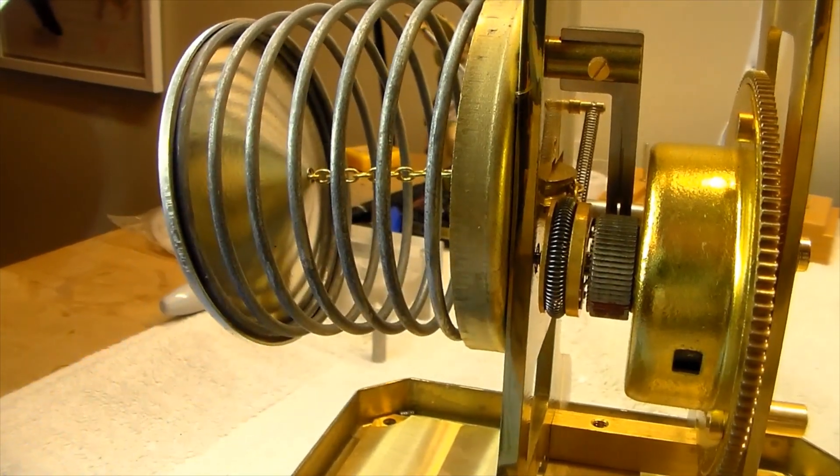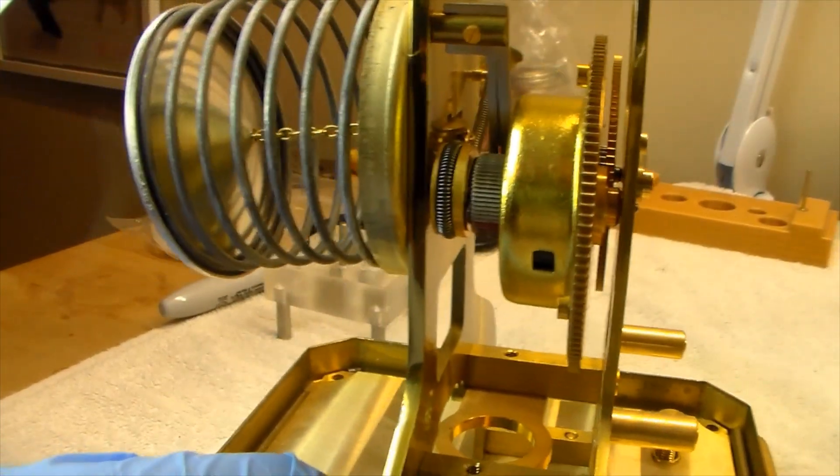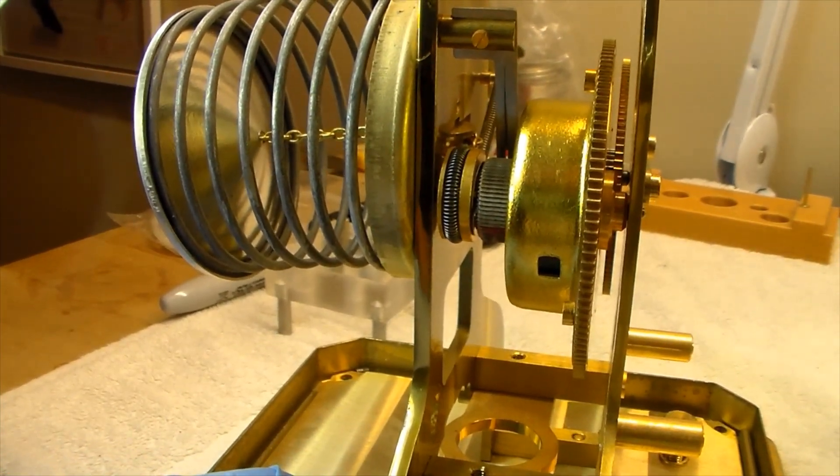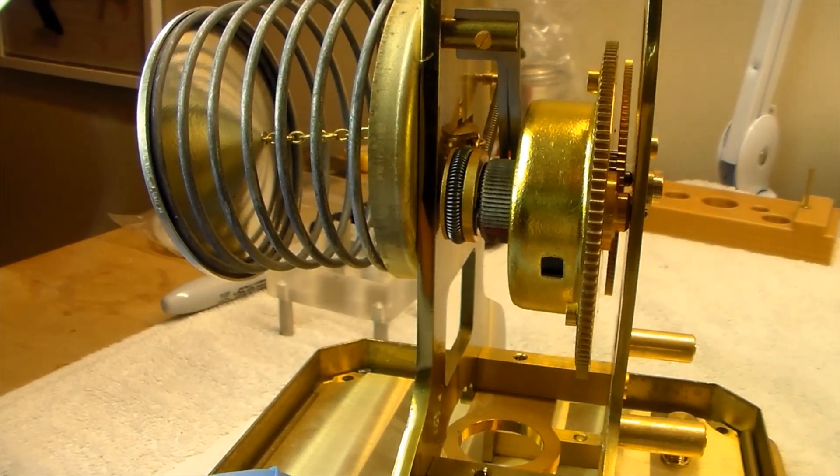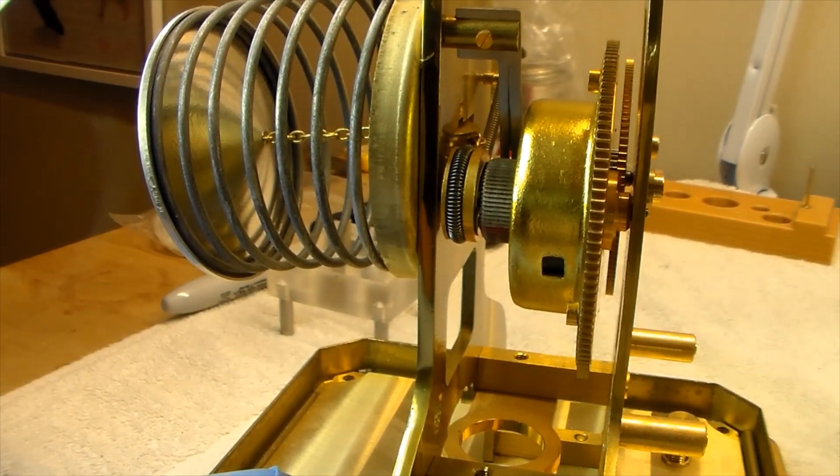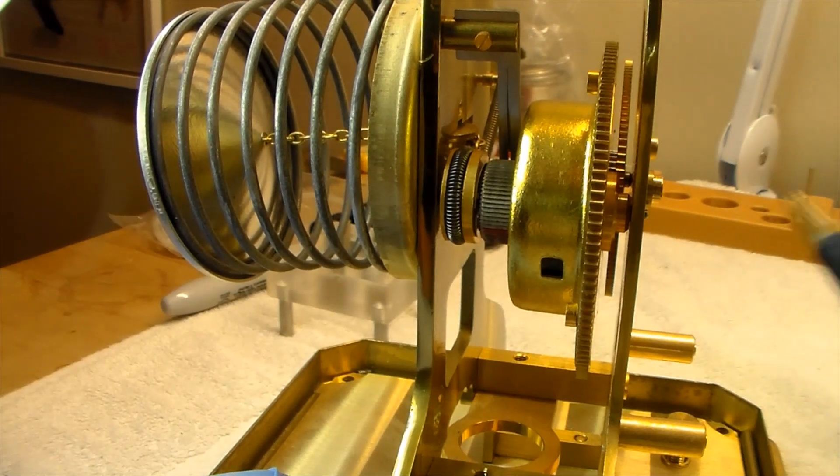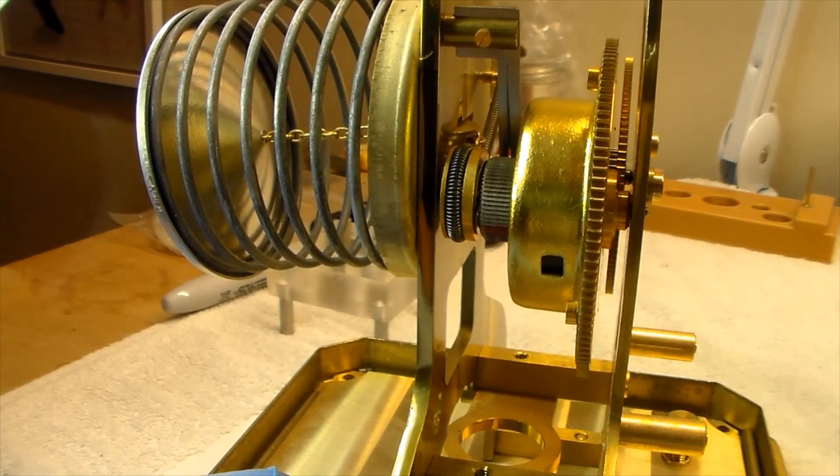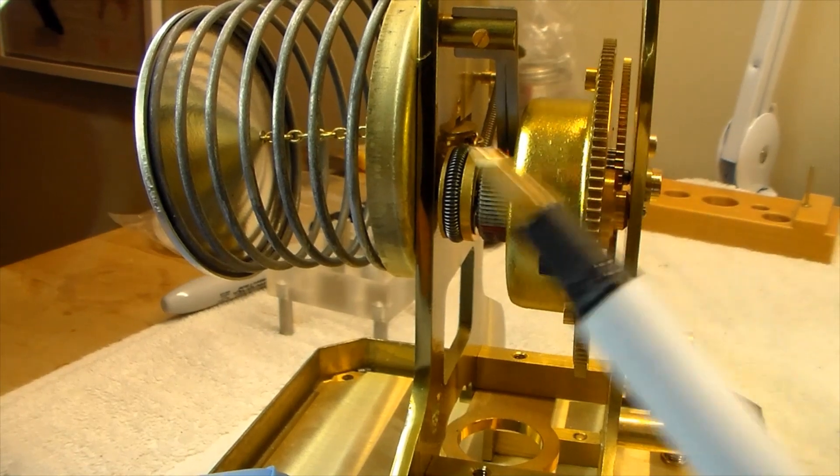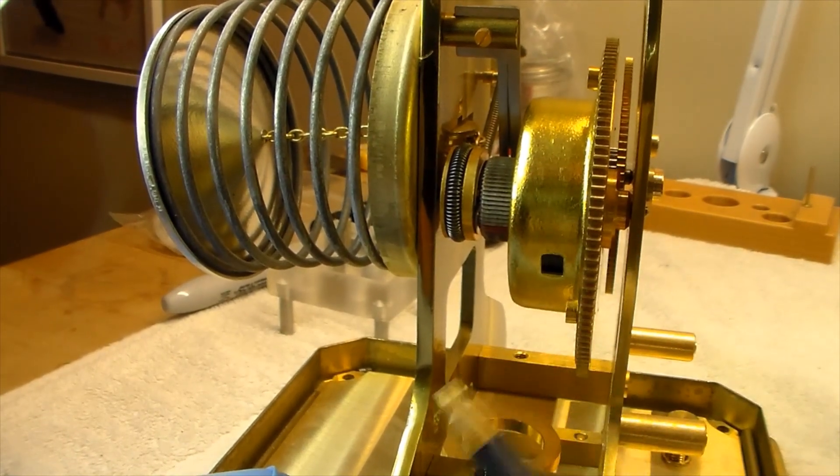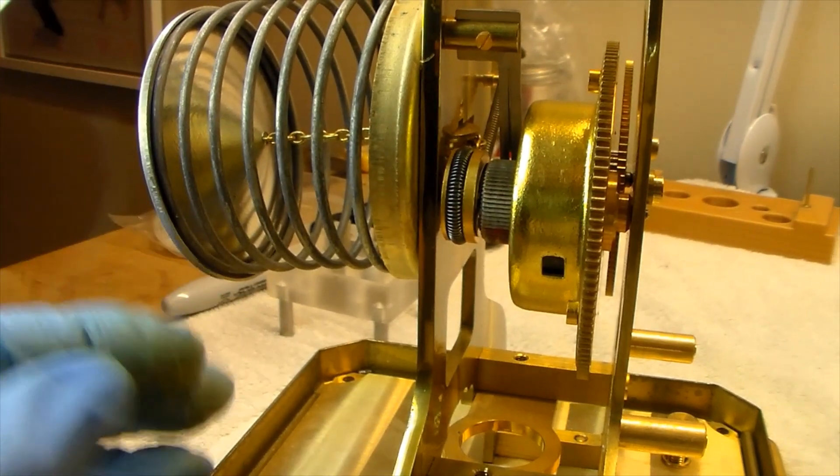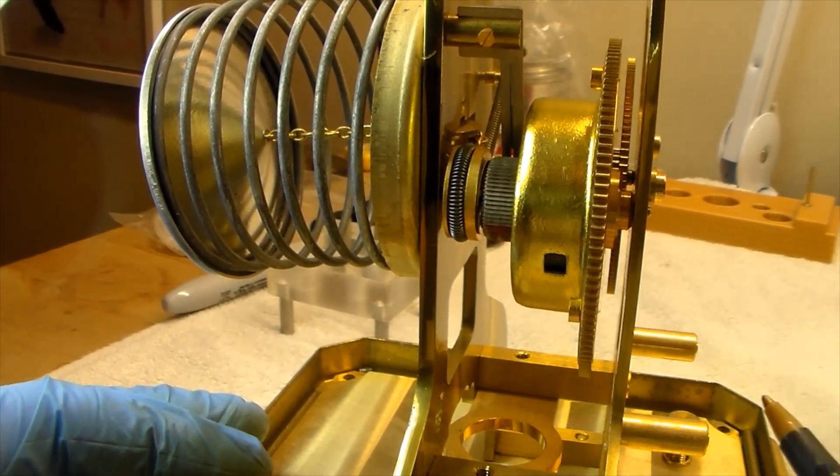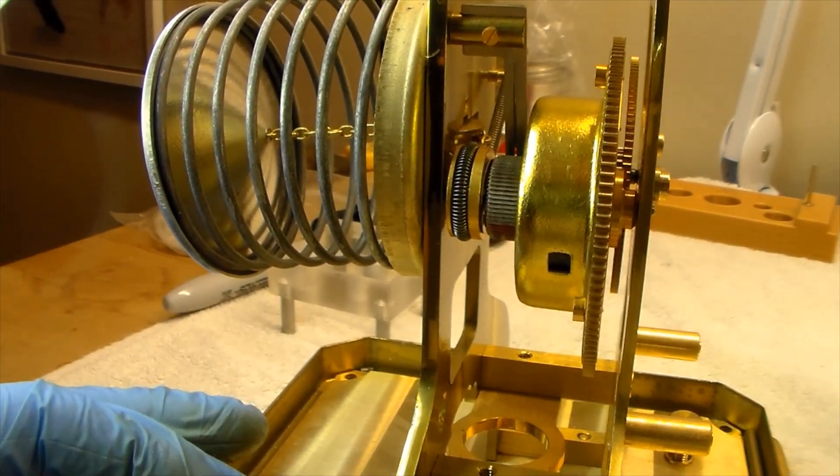A fully wound mainspring will provide nearly a year's worth of running time on the Atmos clock, anywhere between 8 to 12 months. So what it tells you is that the Atmos clock runs on such low power that a fully wound mainspring will power the clock for a year without any additional winding taking place.